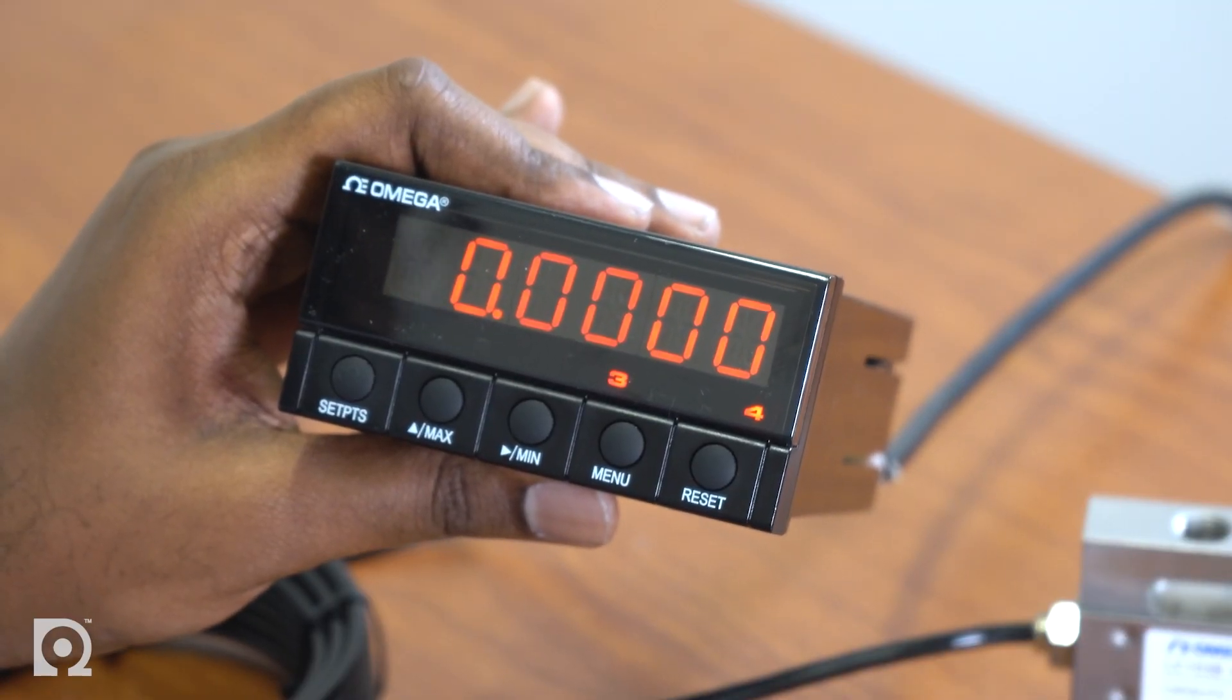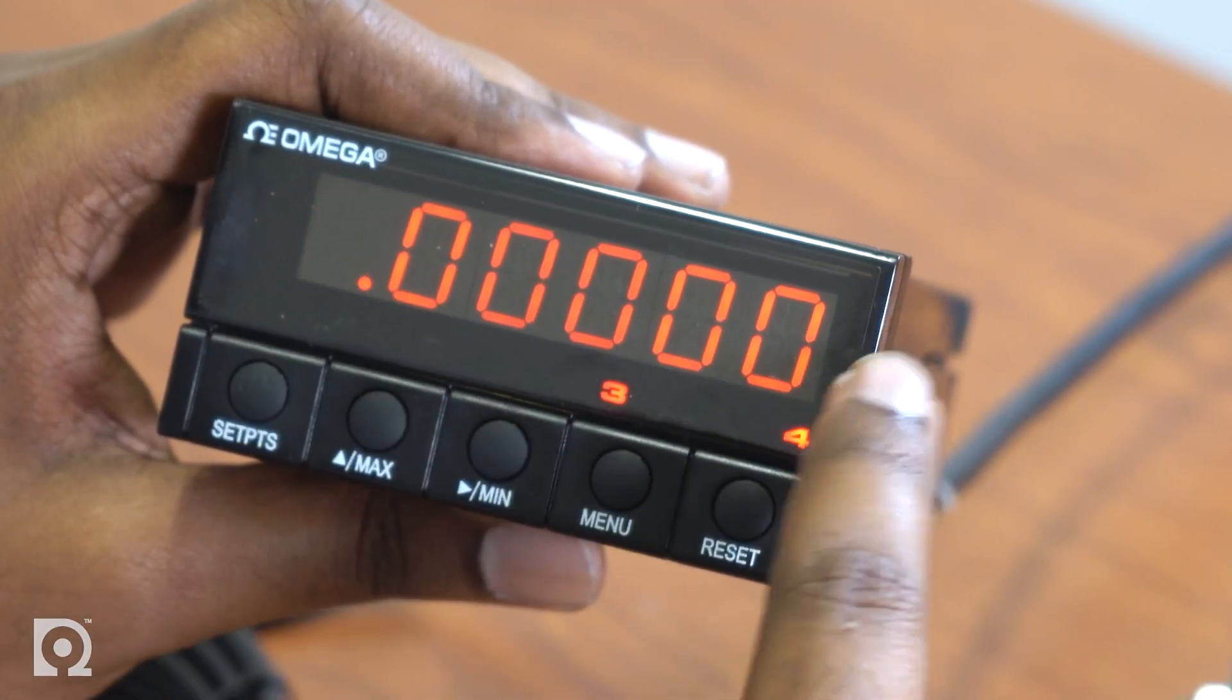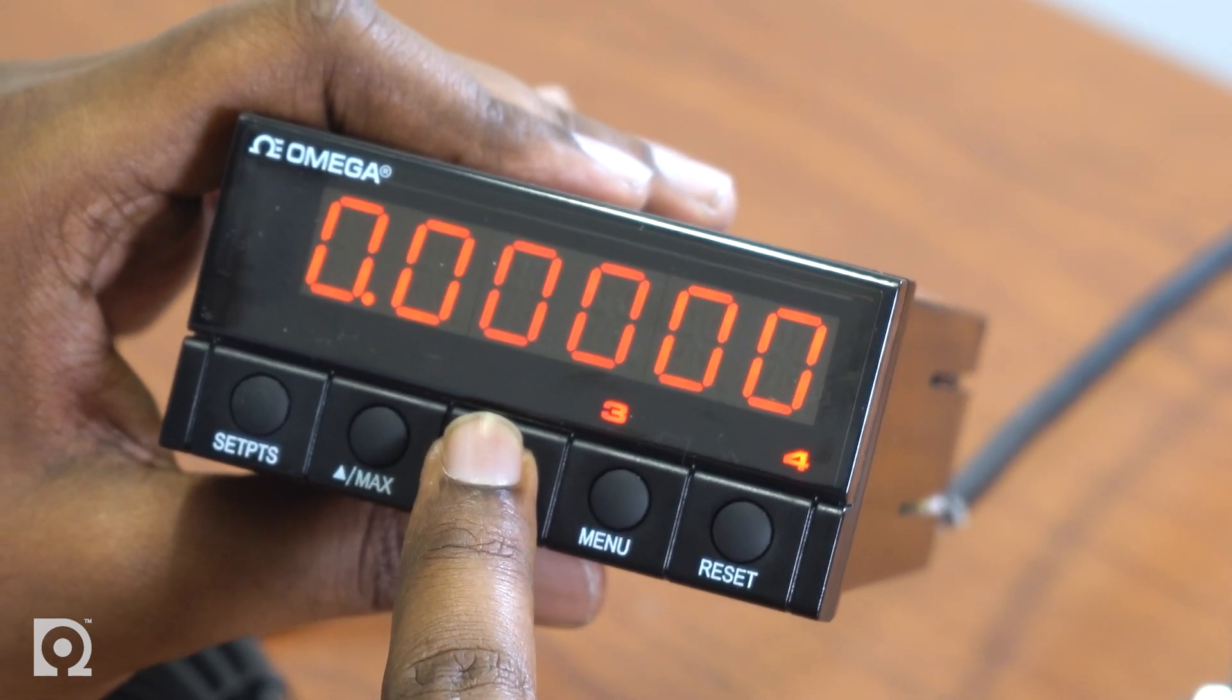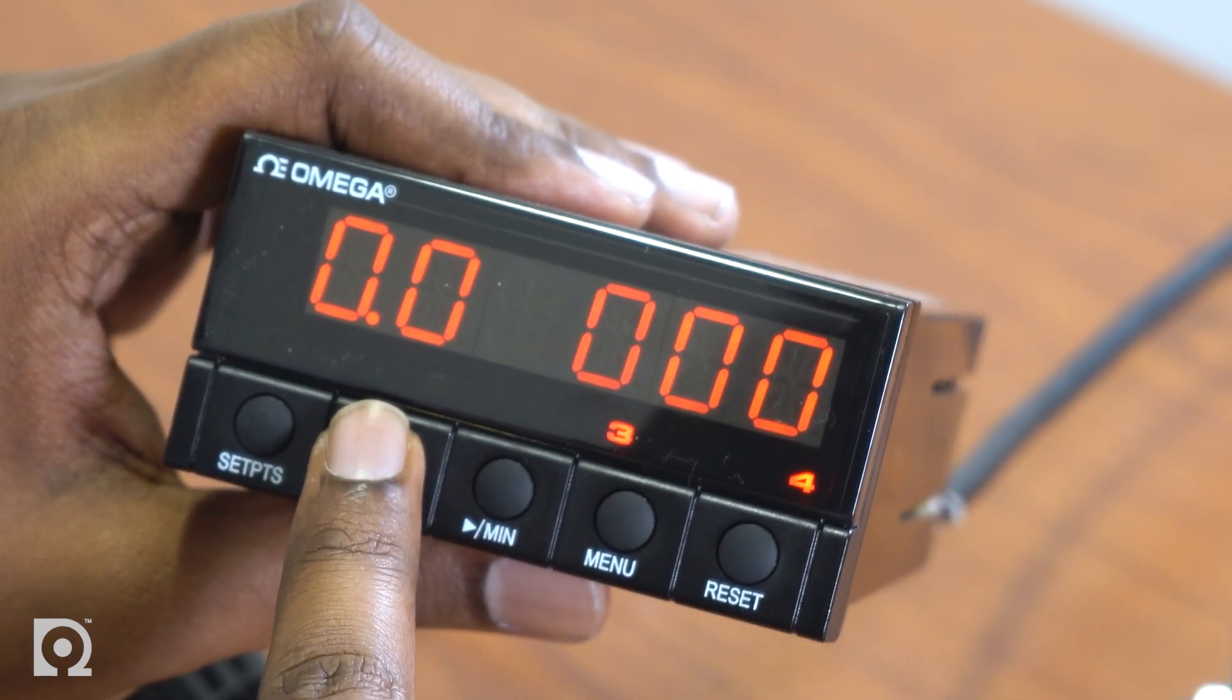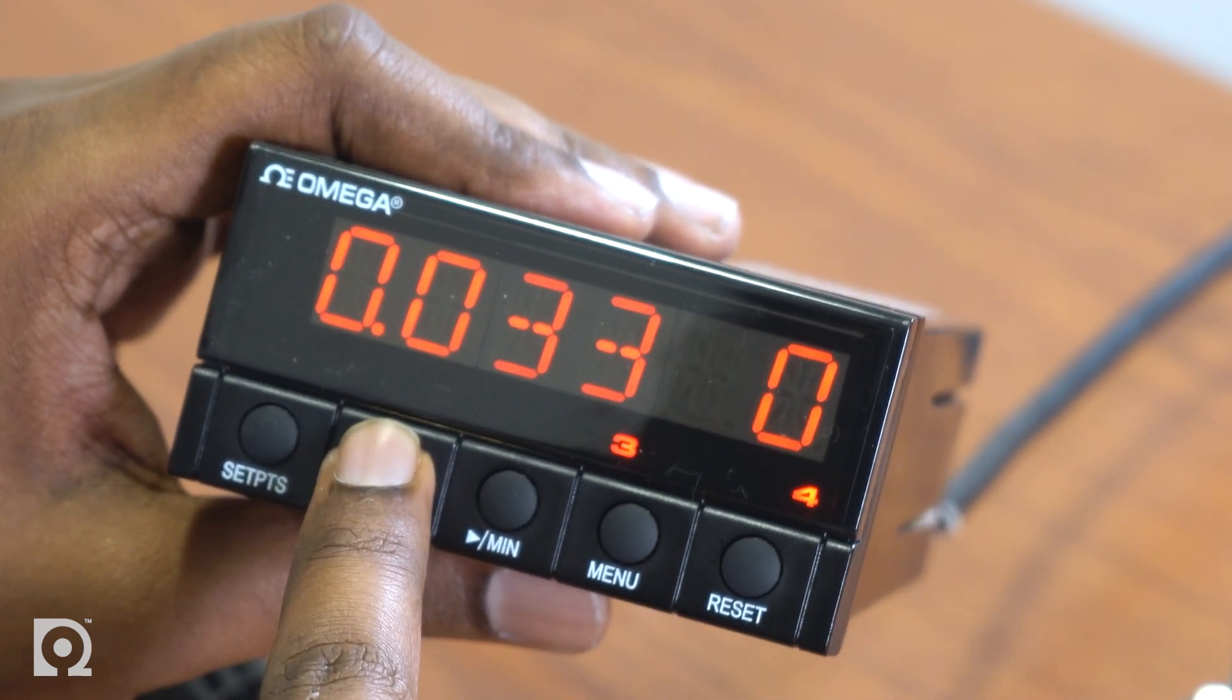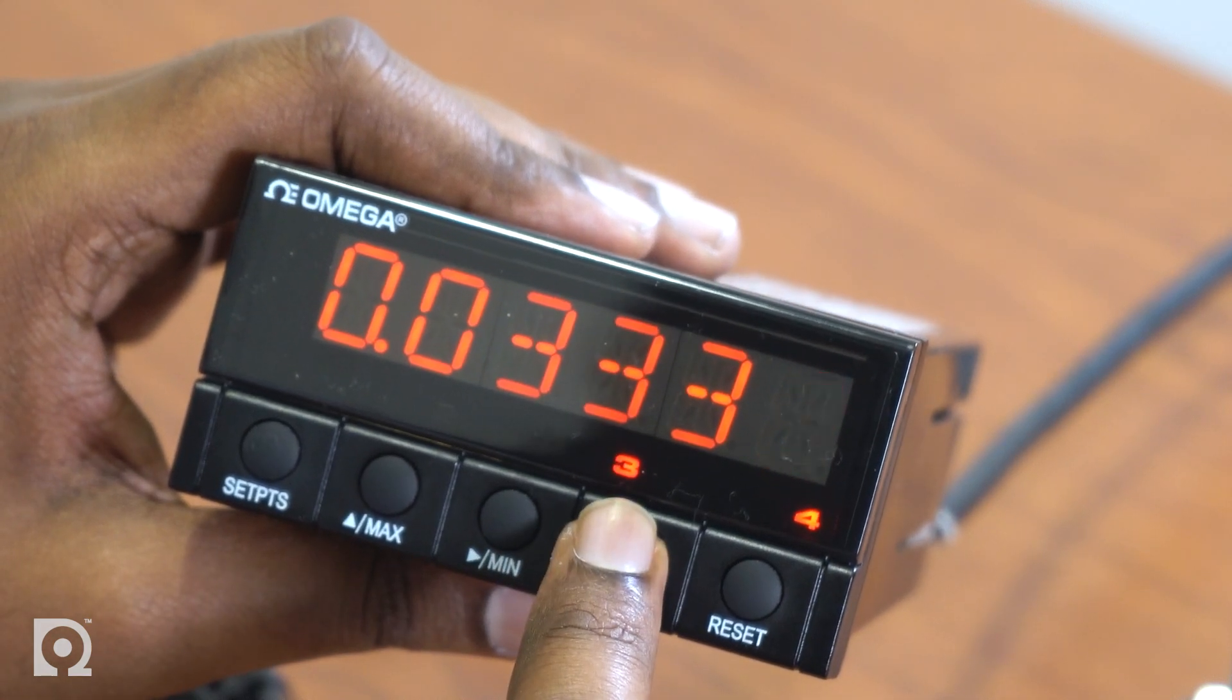To enter the RDG-SC, press the min button once, and you'll see whatever value was set by default when it shipped to you. So this value should be entered with the value that you calculated. In this instance, it's 0.03333. In order to change this value, you can use the min and the max key. The min key basically scrolls through the value of the digits, and the max button changes the value of the digits. So I'm going to go ahead and set the value to 0.0333. Once you've set this value to whatever you calculated this value to be, press the menu button once.